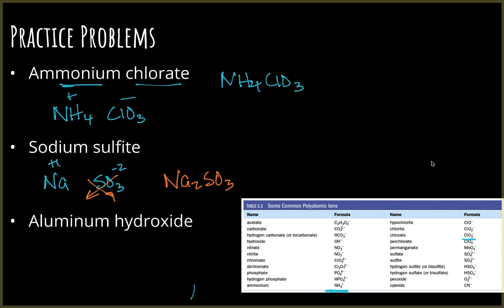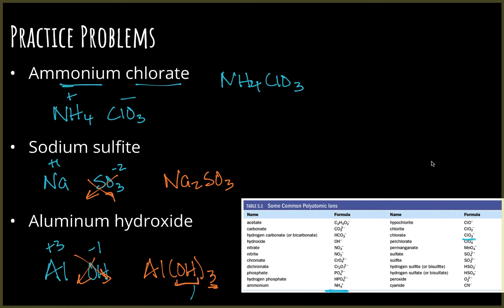Last one: aluminum hydroxide. Al is plus three, hydroxide is minus one. Crisscross — use parentheses here to show that the three applies to the whole OH grouping. Without parentheses it would look like the three just belonged to the hydrogen. So we write Al(OH)3, showing there are three groups of OH, because if Al is plus three, you need three of those negative one charges to balance it out.